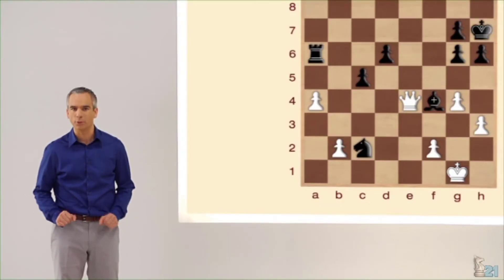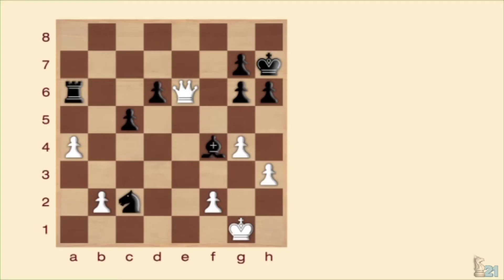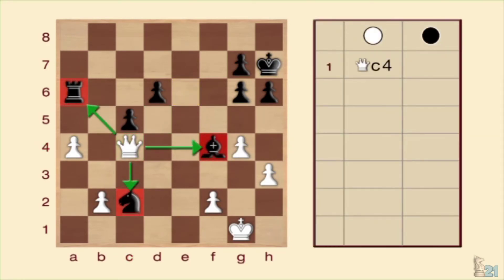Pero volvamos a la posición inicial. ¿Qué jugada sería más fuerte para aprovechar las piezas negras indefensas? La solución pasaría por utilizar un recurso un tanto sorprendente y poco habitual: el ataque triple. Y para conseguirlo, deberíamos mover la dama a C4. De esta manera, estaríamos amenazando a las tres piezas negras a la vez.